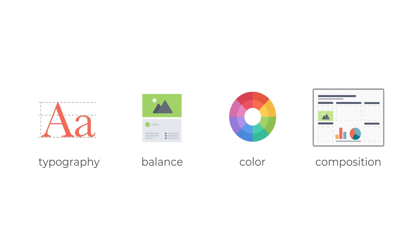Altogether, these four elements — typography, balance, color, and composition — are quick ways to ensure that you create a beautiful research poster, one that highlights and supports your completed research. Don't forget, there might also be specific instructions about either the size or format that might be unique to a particular event. Remember to double check before you submit.